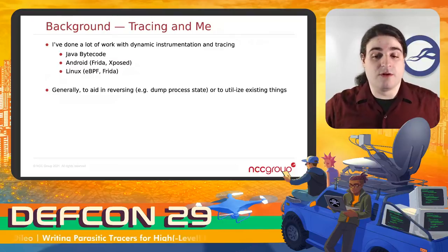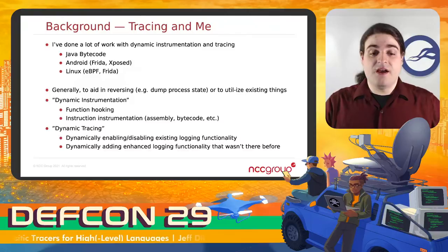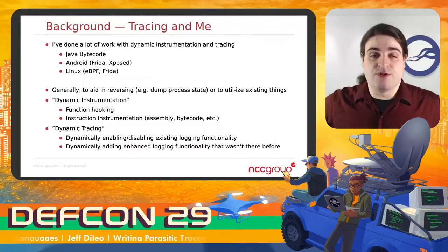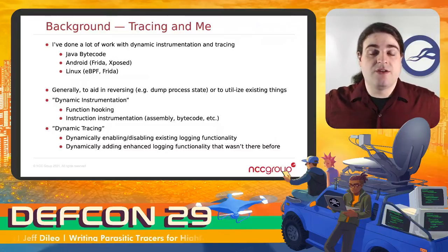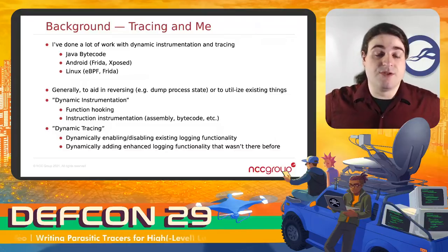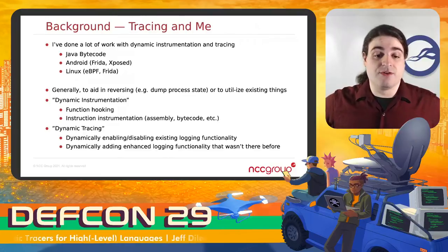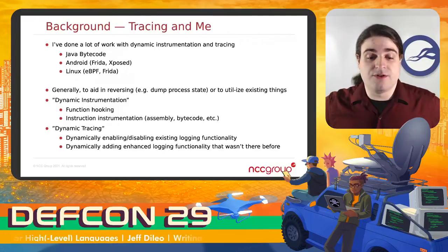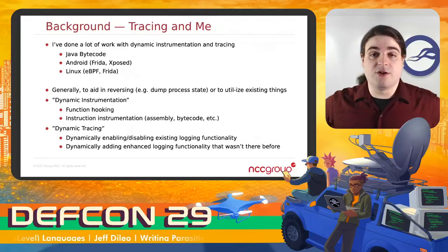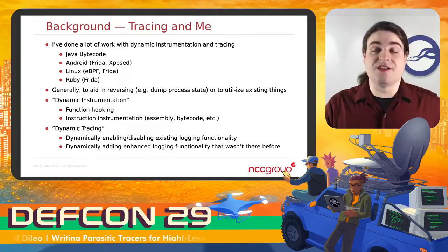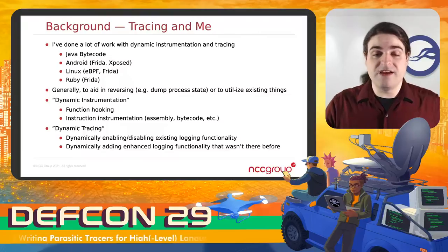Generally, I do a lot of this stuff mostly for reversing and learning, and also to script up existing things to do other things. For dynamic instrumentation — just as a quick refresher — this generally means function hooking or instruction instrumentation, the latter of which mostly means modifying bytecode or assembly to do something different. With function hooking, you're hijacking control flow directly. Dynamic tracing can mean dynamically enabling or disabling existing logging functionality, but for our purposes, this mostly means adding enhanced logging functionality that wasn't there before.